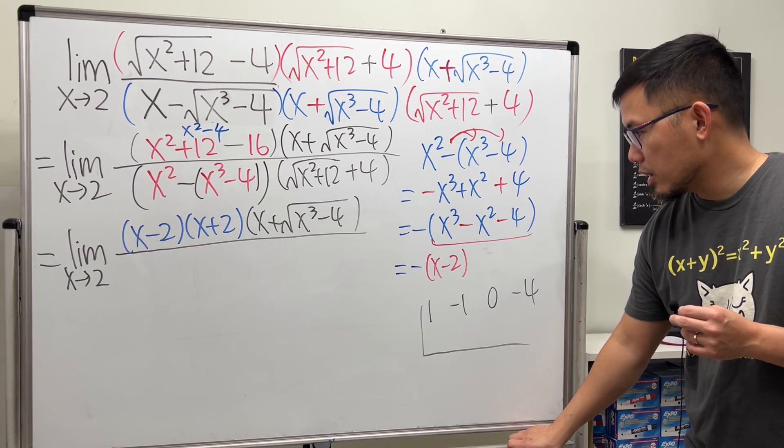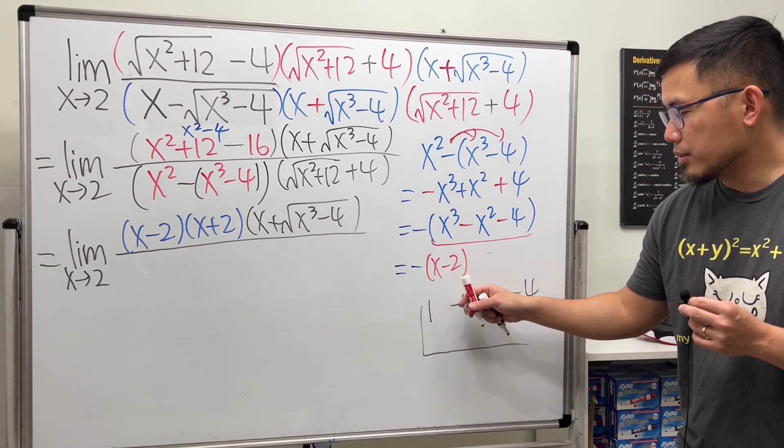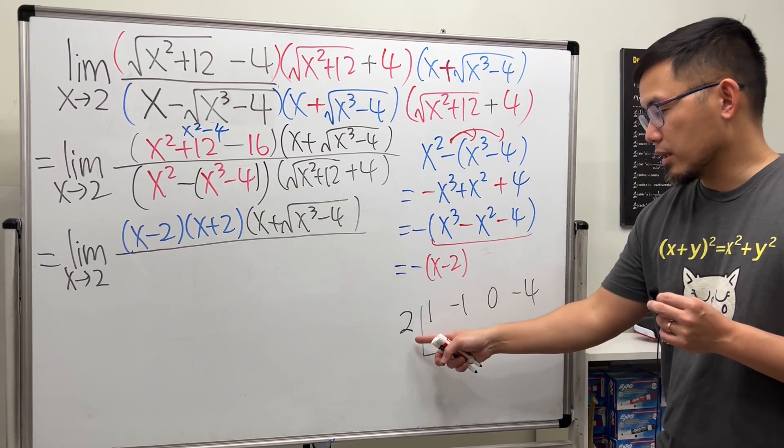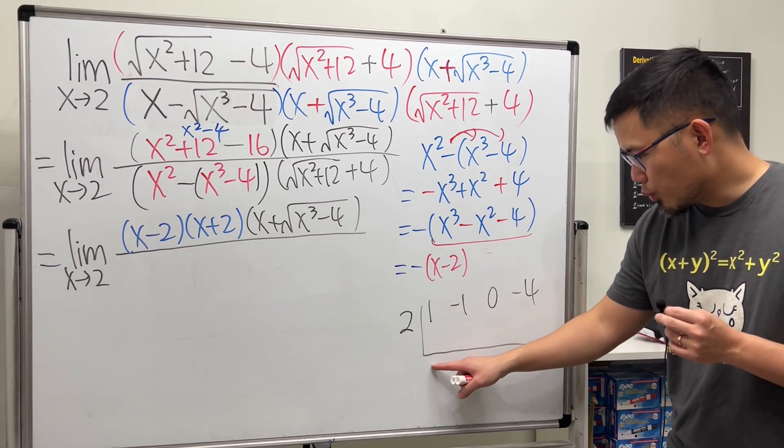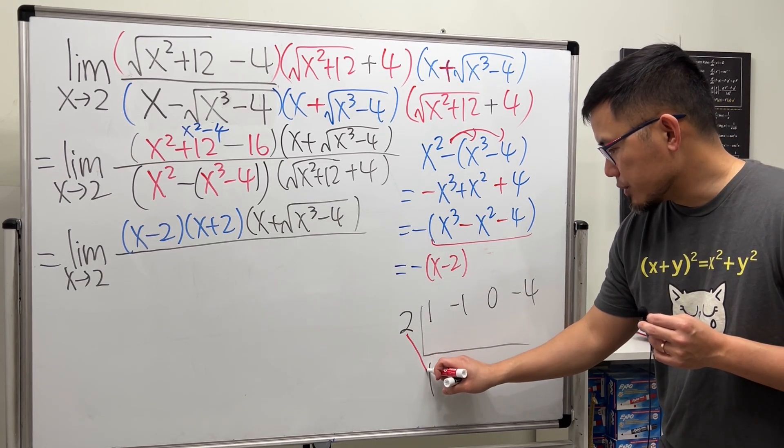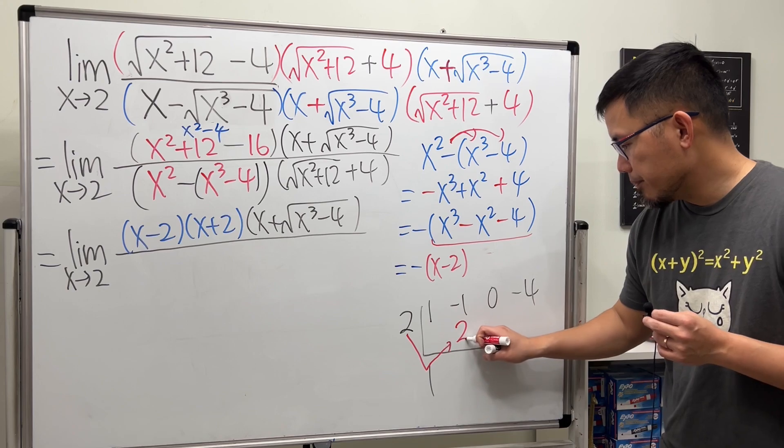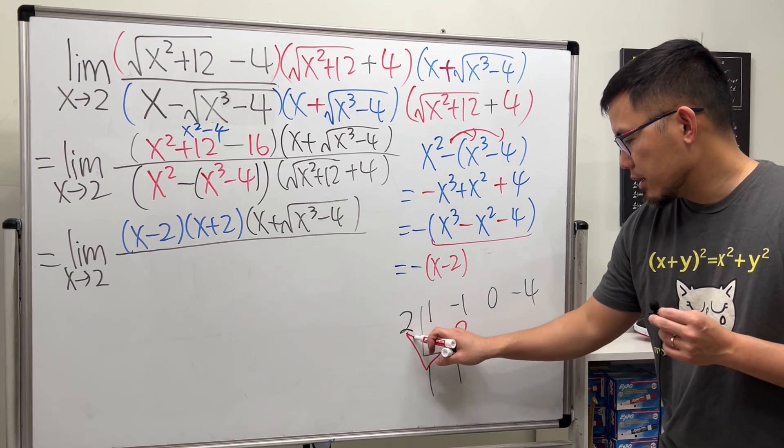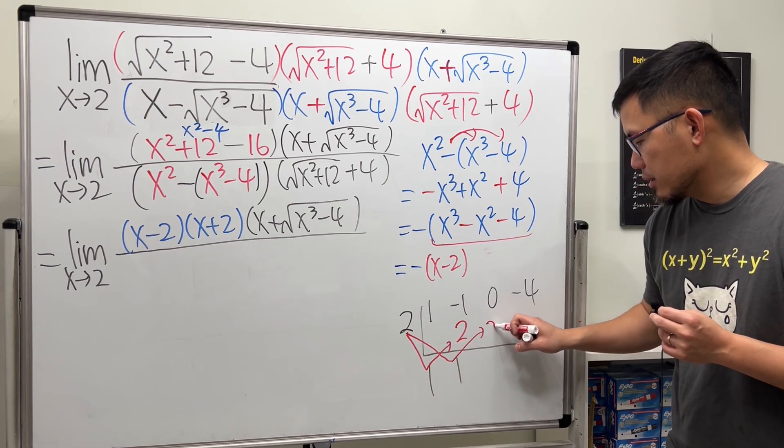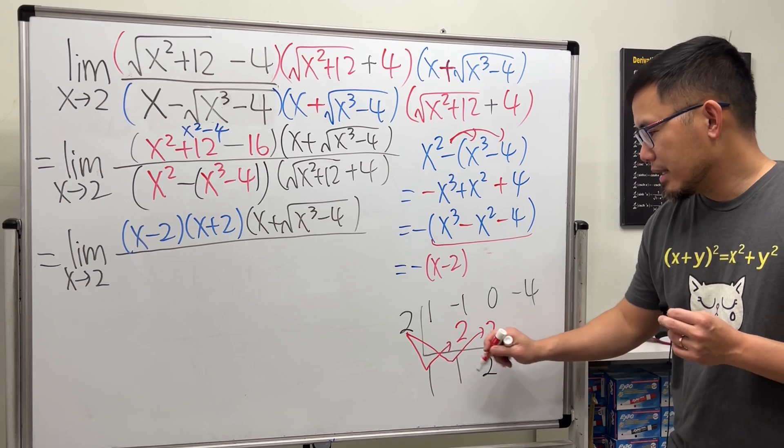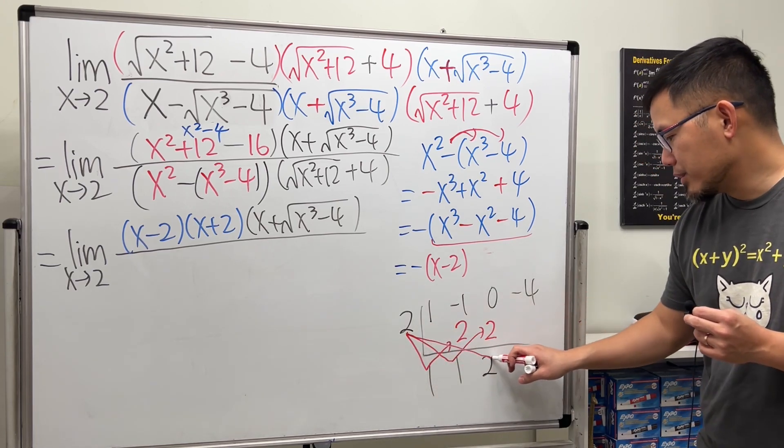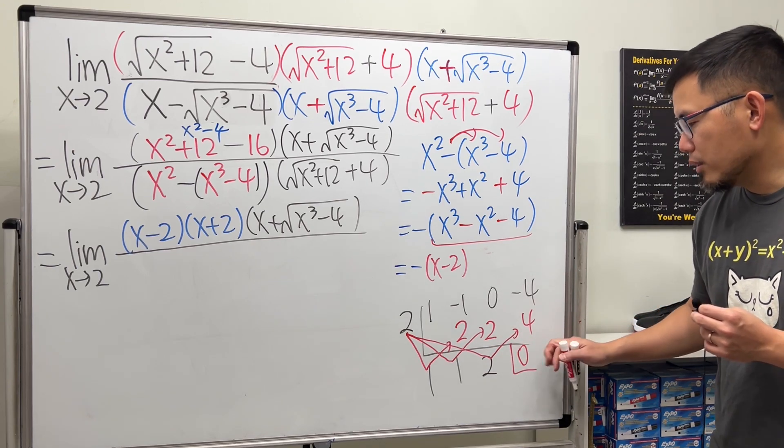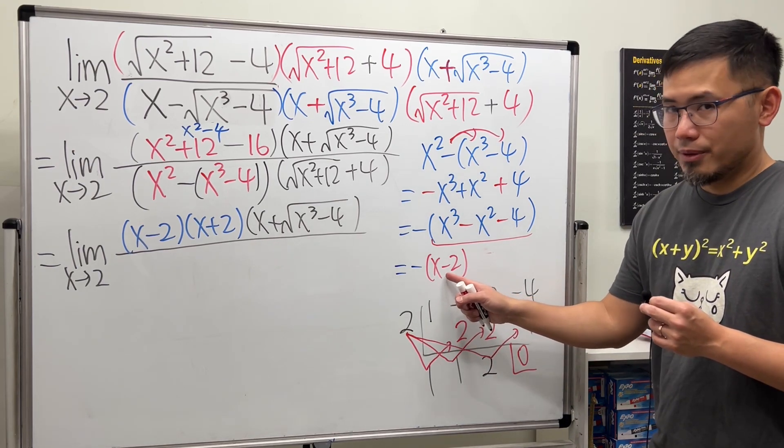And then, let's go ahead, because we have x minus 2, we are going to put down a 2 right here. 2 is the zero, so you put down a 2. Here we go. Bring the 1 down. You do 2 times 1, which is 2, and you put it here, and you add for synthetic division. Negative 1 plus 2 is 1. And then do it again. This times this is 2, and you put it here. 0 plus 2 is 2. Lastly, 2 times 2 is 4. Put it here. This and that is 0. You should always end up with a 0 if you have this right here being a factor.